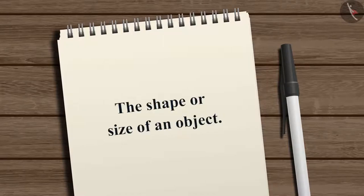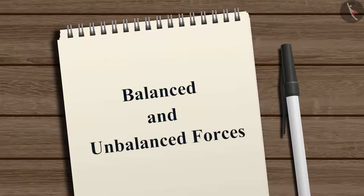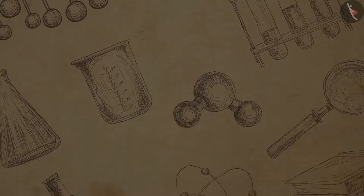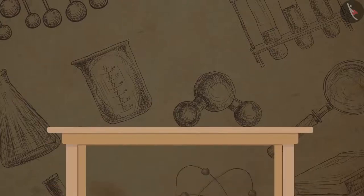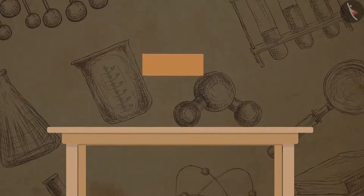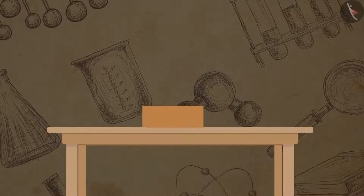Now let us try to understand the concept of balanced and unbalanced forces. Let us do one simple experiment to understand it better. Take a wooden block and place it on a smooth horizontal table. Attach one string on both of the opposite faces of the block.